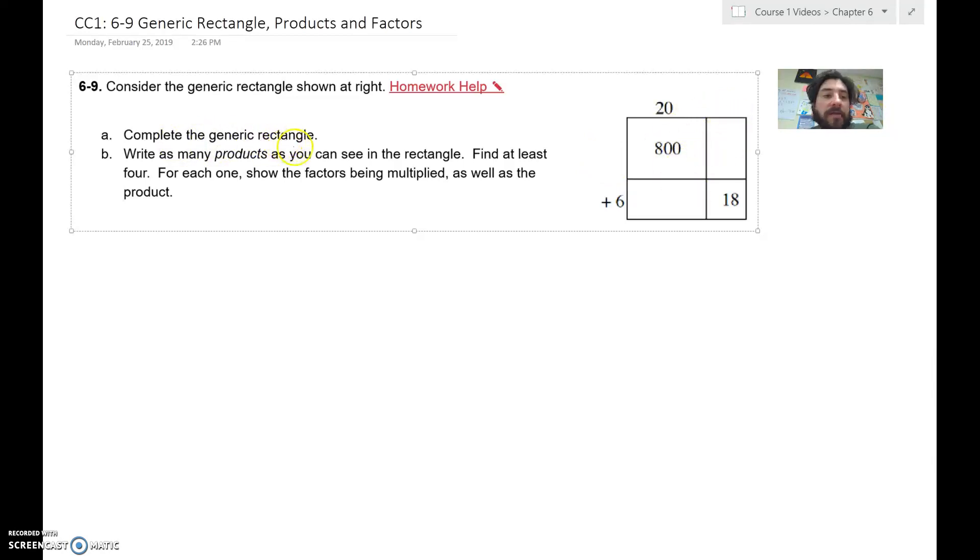So it says complete the generic rectangle, and then the second part is write as many products as you can see in the rectangle. Find at least four. For each one, show the factors that are being multiplied, so the dimensions on the outside of the rectangle, as well as the product.